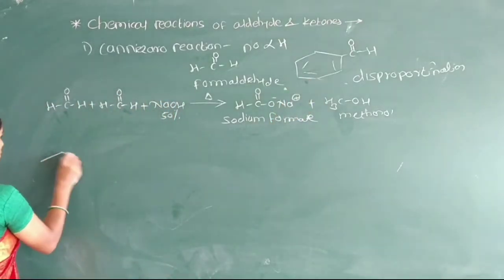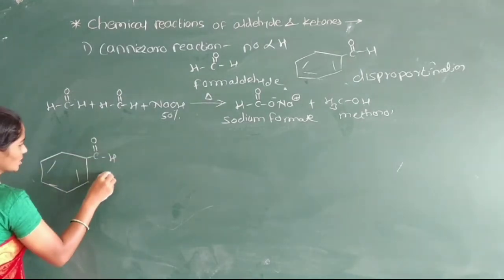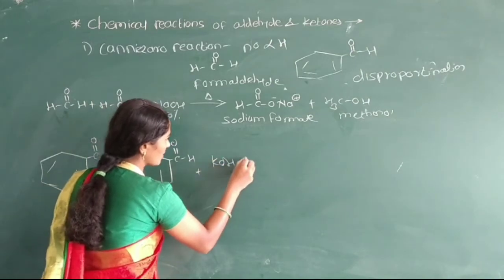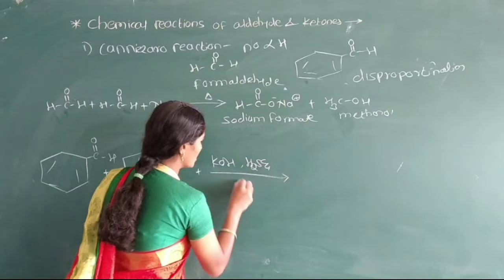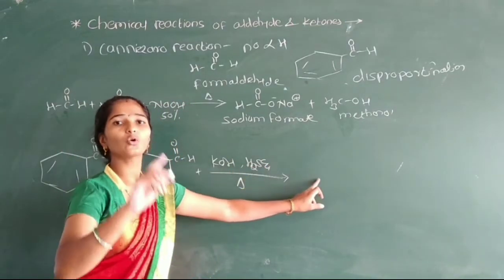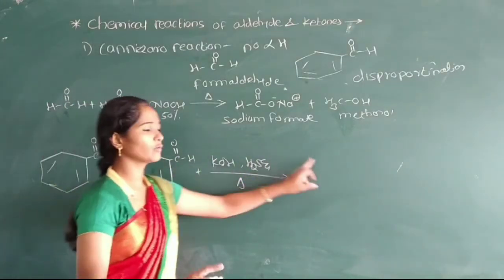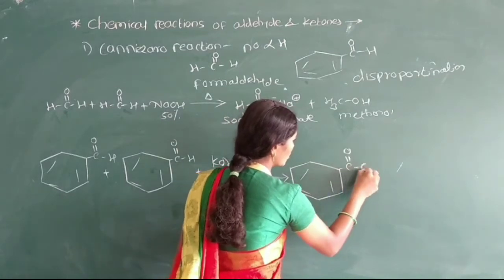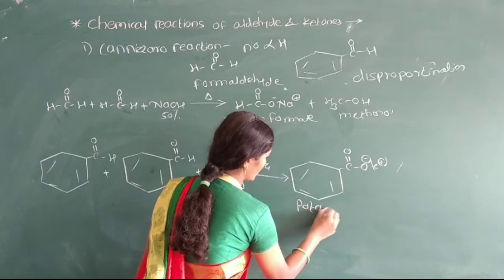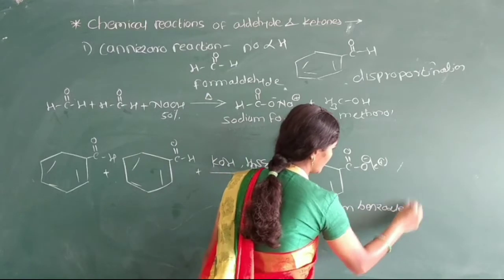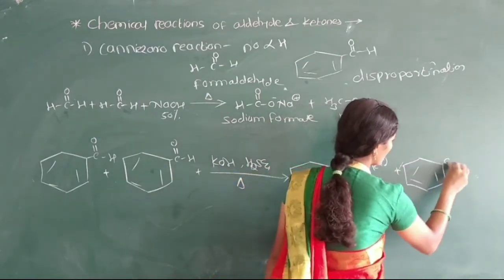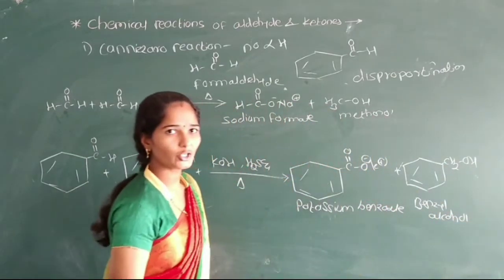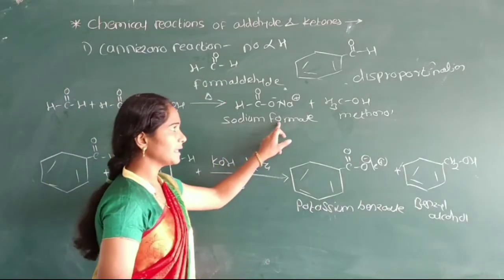For example, benzaldehyde: one molecule of benzaldehyde reacts with a second molecule of benzaldehyde in presence of potassium hydroxide. Here also, one molecule of benzaldehyde is converted into a carboxylate salt (COO⁻Na⁺) and the second molecule of benzaldehyde is converted into benzyl alcohol (CH₂OH). It is a Cannizzaro reaction with absence of alpha hydrogen atom leading to formation of acid and alcohol.